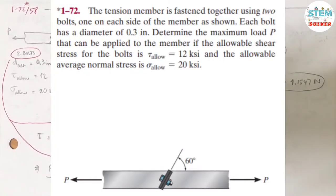The tension member is fastened together using 2 bolts, one on each side of the member as shown. Each bolt has a diameter of 0.3 inches. Determine the maximum load P that can be applied to the member if the allowable shear stress for the bolts is 12 ksi and the allowable average normal stress is 20 ksi.